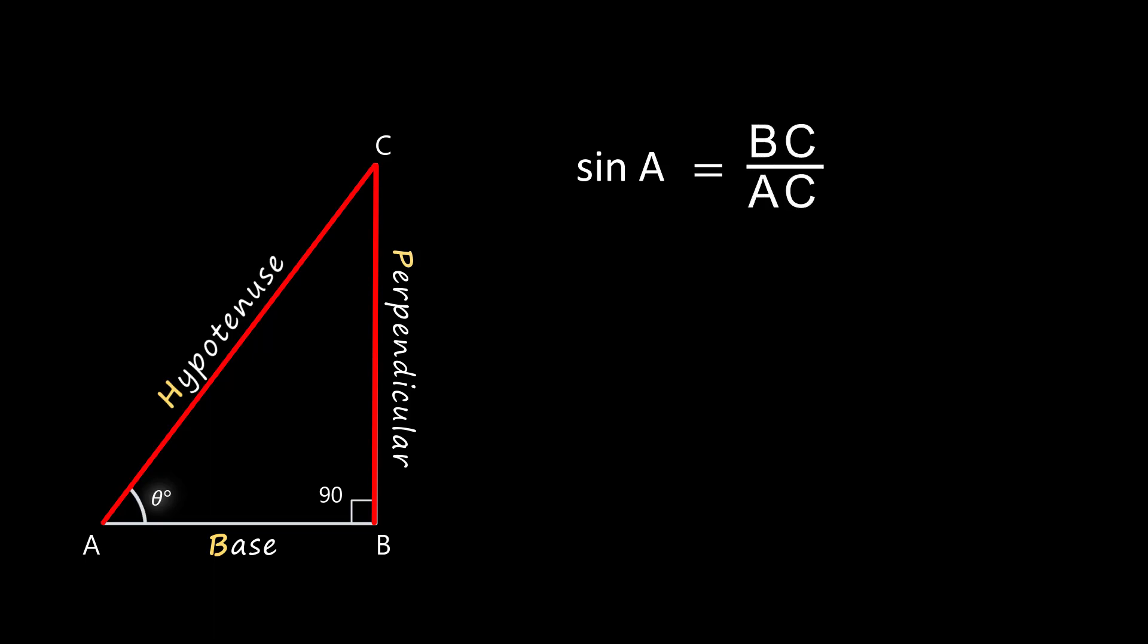Let's derive the six trigonometrical ratios in triangle ABC for acute angle A. Sin A is the ratio between the length of the perpendicular and the hypotenuse. Here perpendicular is equal to BC and hypotenuse is equal to AC. Since I have denoted perpendicular by letter P and hypotenuse with letter H, sin A is equal to BC by AC that is equal to P by H.